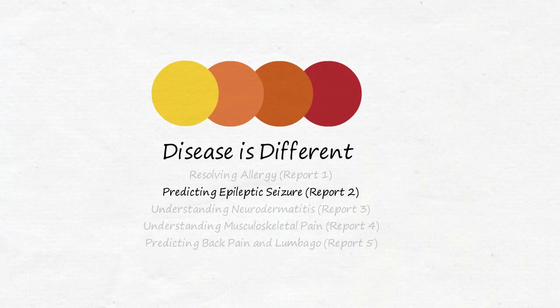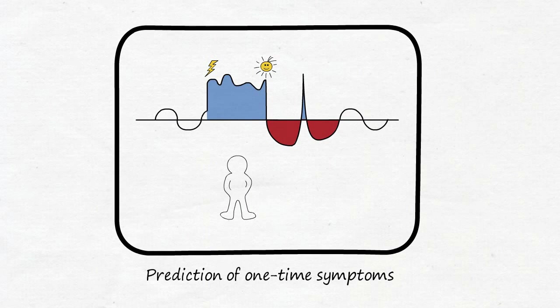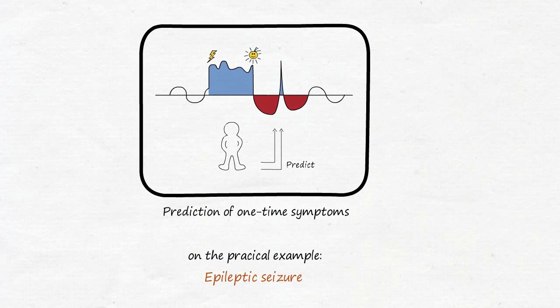In this practical part of the video series Disease is Different, we look at the exciting possibility of predicting unprecedented symptoms, which is impossible with the conventional medical model. Our real case history example: the prediction of a single epileptic seizure.